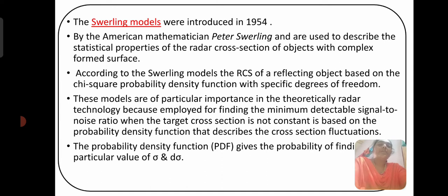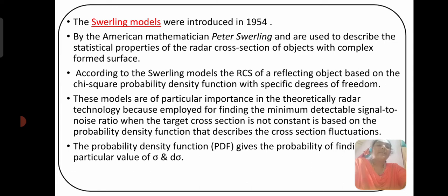According to the Swerling model, he used the chi-square probability density function with specific degrees of freedom. These models are particularly important in theoretical radar technology because they are employed for finding the minimum detectable signal-to-noise ratio when the target cross-section is not constant. This is based on the probability density function that describes the cross-section fluctuation. If you are not keeping the radar cross-section, fluctuations cannot be identified. So this model is mainly used for finding the minimum detectable signal-to-noise ratio.